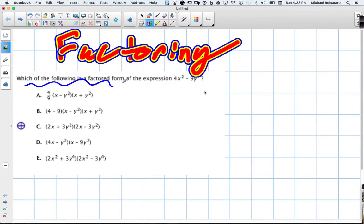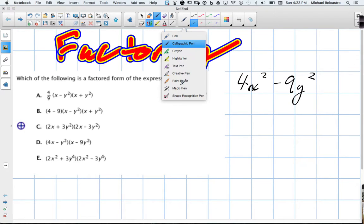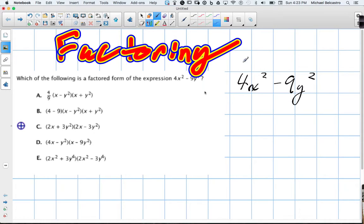Okay, so which of the following is the factored form of this expression here? I've kind of already drawn over it, so I'll write it again. We have 4x squared minus 9y squared. Now, we talked about it. This is a very special case.